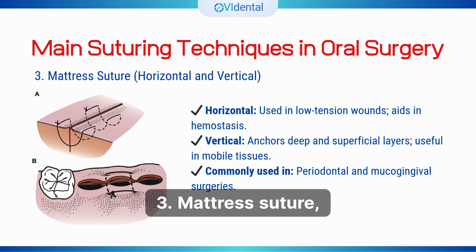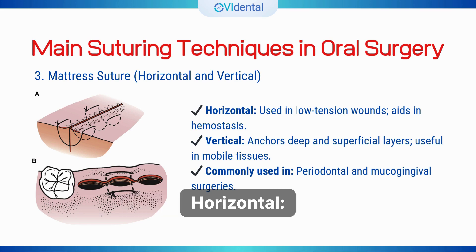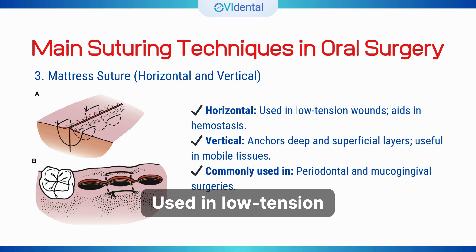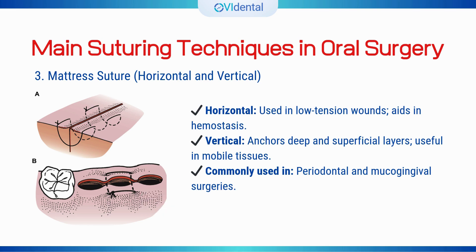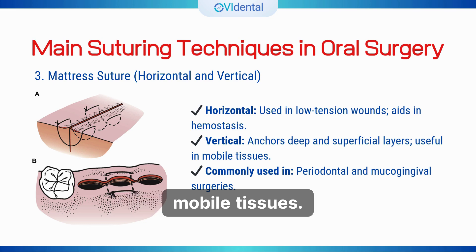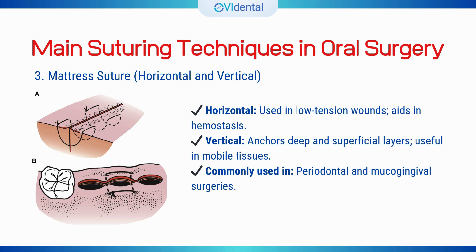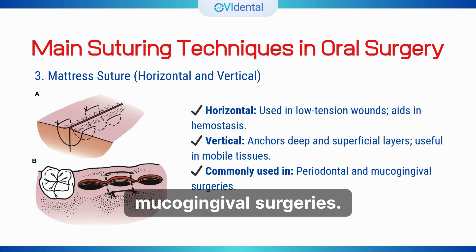3. Mattress suture — horizontal and vertical. Horizontal: used in low tension wounds, aids in hemostasis. Vertical: anchors deep and superficial layers, useful in mobile tissues. Commonly used in periodontal and mucogingival surgeries.